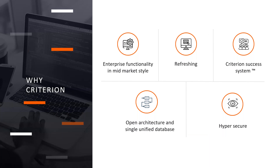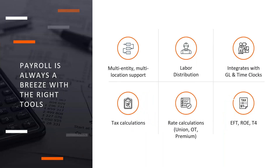It's an open architecture, so we can talk about integrating and sending or receiving information from other systems, all within a very secure environment. Within Criterion, you have the ability to manage multiple entities or companies, so you can track employees working for one or moving between companies, all in the same database. This allows reporting either across those different entities or strictly by one. We'll also talk about labor distribution, because this digs into tracking time and then costing that information when you move it from payroll into your general ledger.